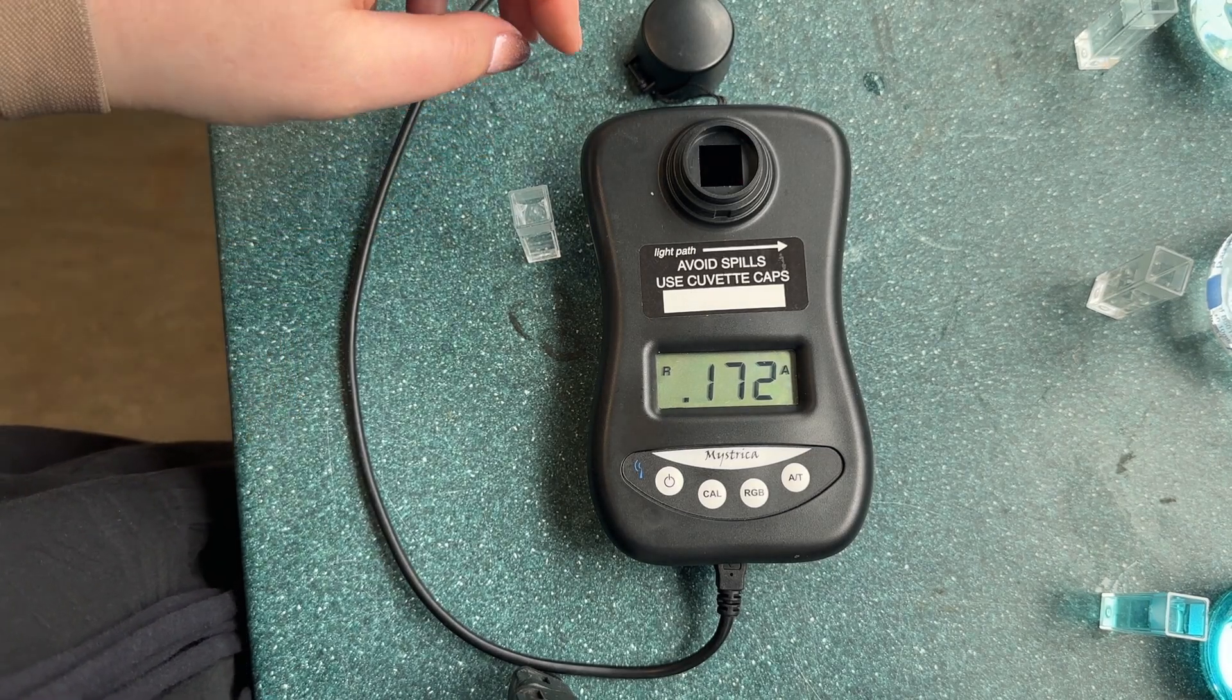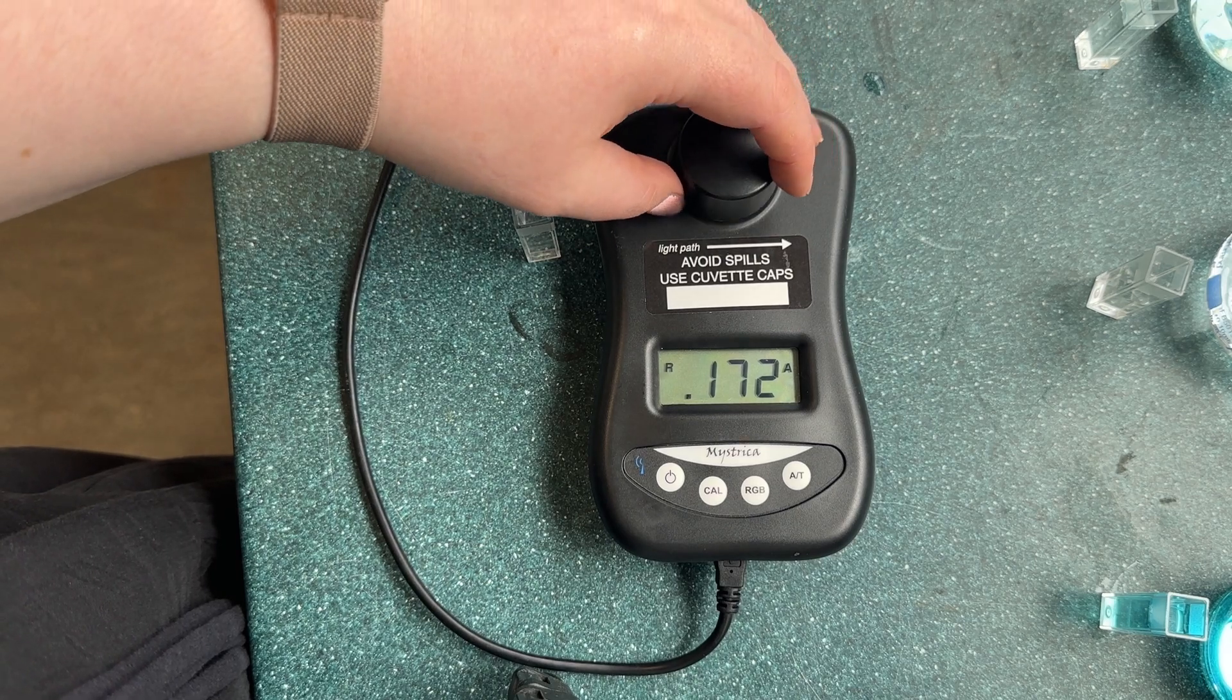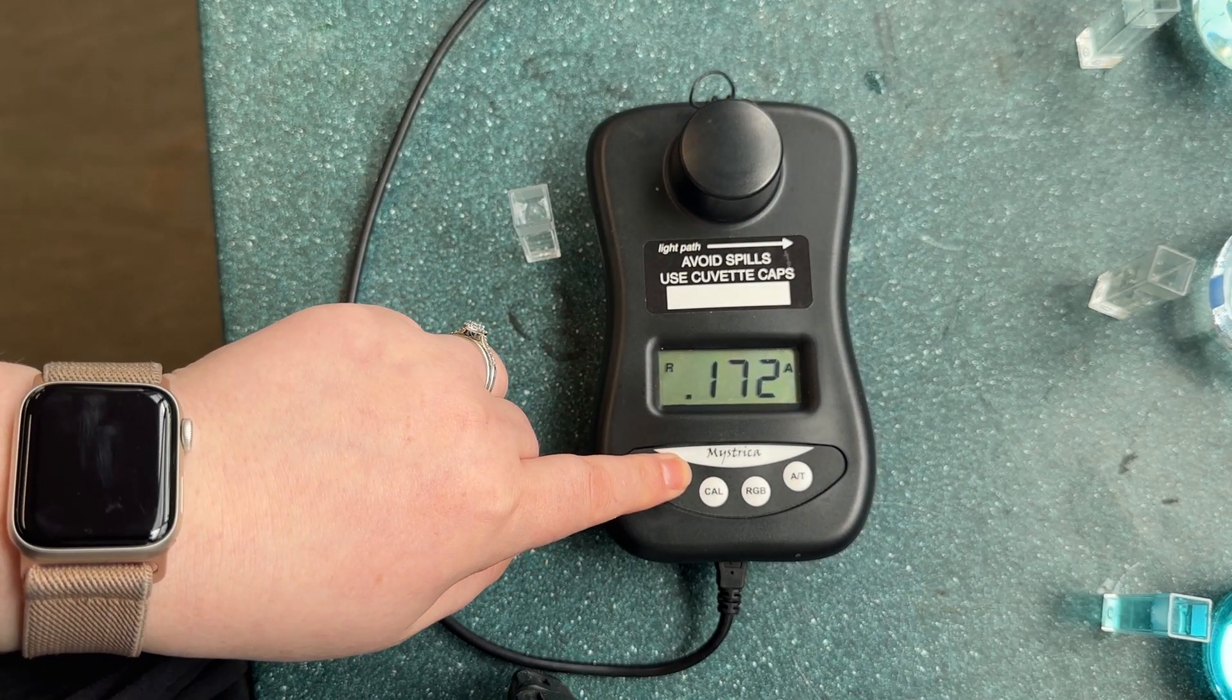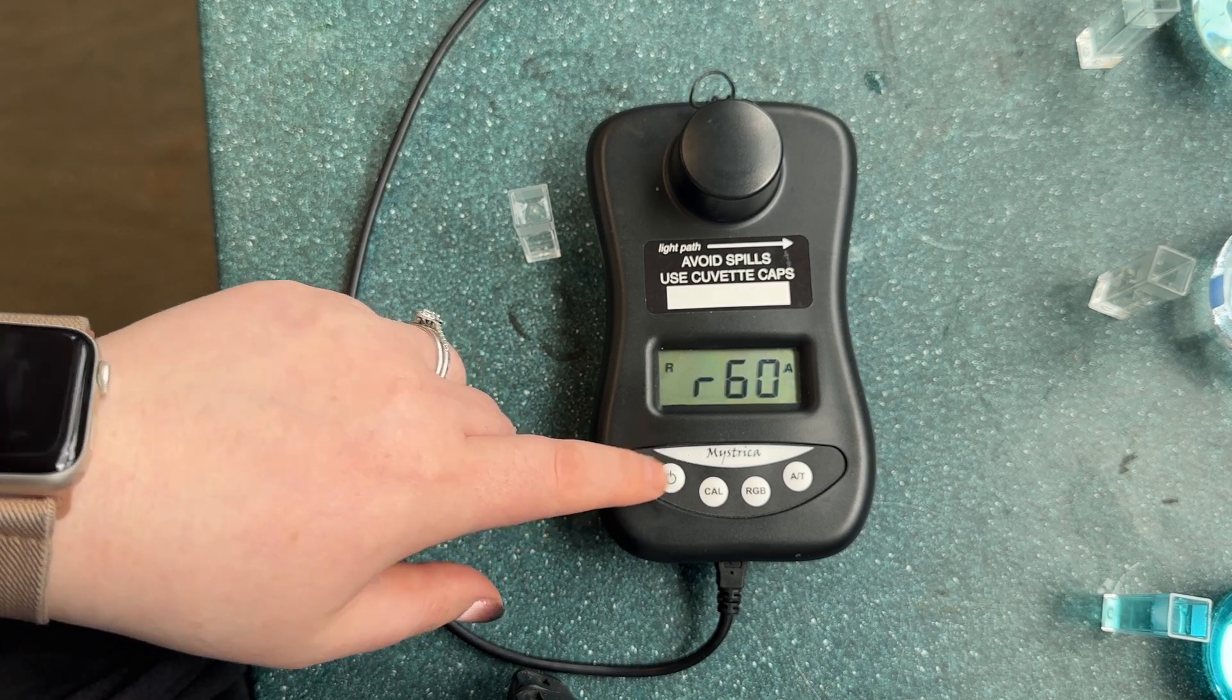To carry out the colorimetry itself we use a colorimeter. Here's an example of a very basic colorimeter. This colorimeter has three different color options: red, green and blue.